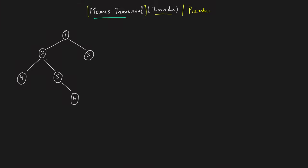We already know recursive traversal, which takes O(n) time and O(n) auxiliary stack space, and the iterative traversal takes similar amounts. But Morris Traversal runs in nearly O(n) time, and the specialty is it does not consume any extra space — it does everything in O(1) space.